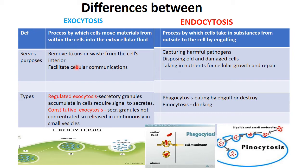Exocytosis serves to remove toxins or waste — whatever metabolites and products are harmful — from the cell's interior. It also facilitates cellular communication. The purpose of endocytosis is to capture harmful pathogens, dispose of old and damaged cells, and take in nutrients for cellular growth and repair, making it important for immunity.